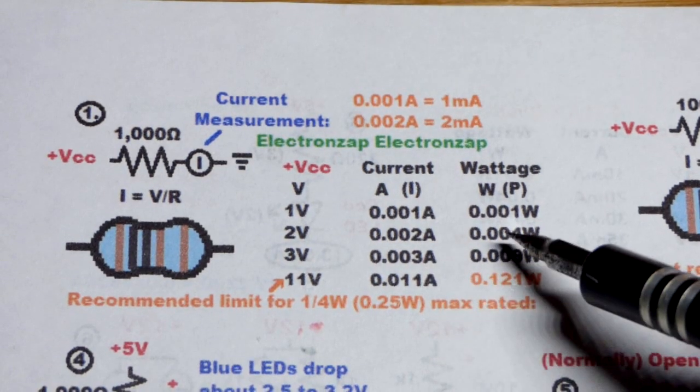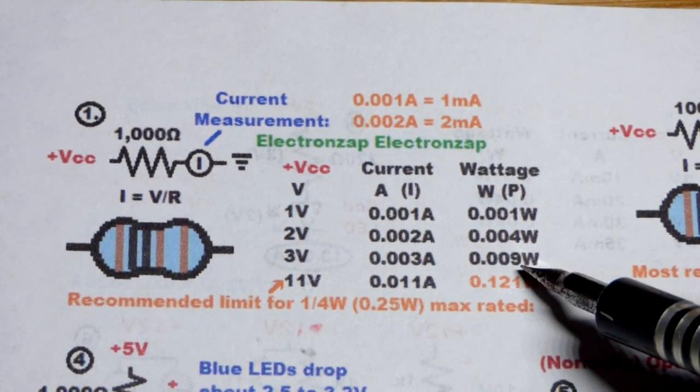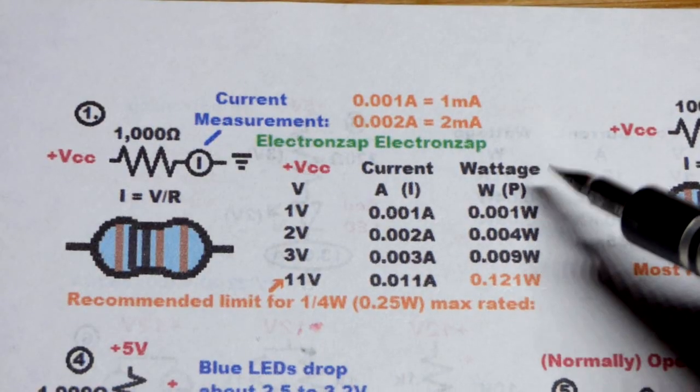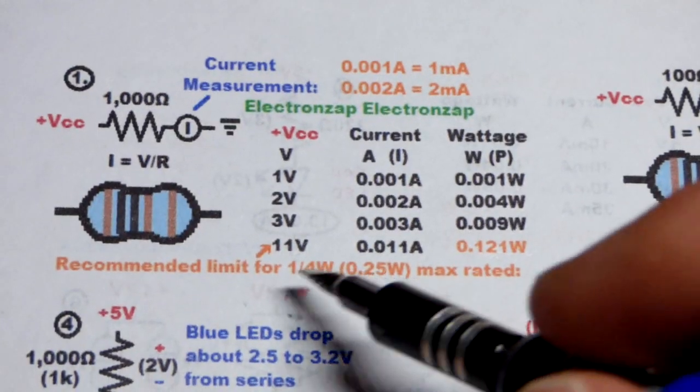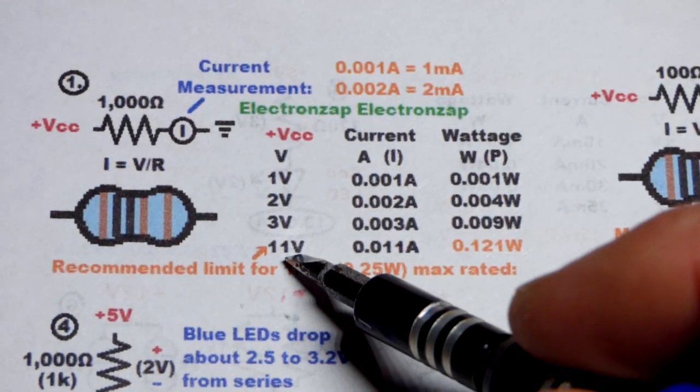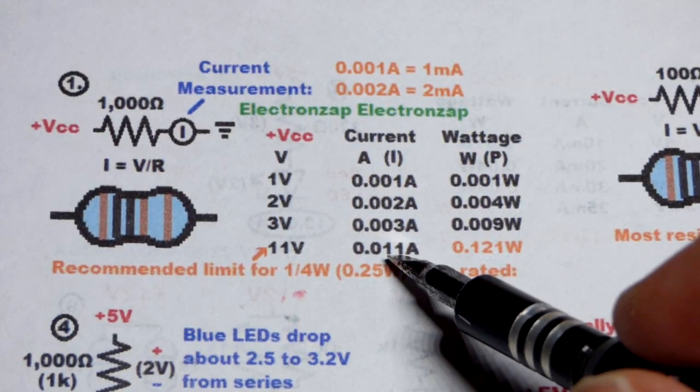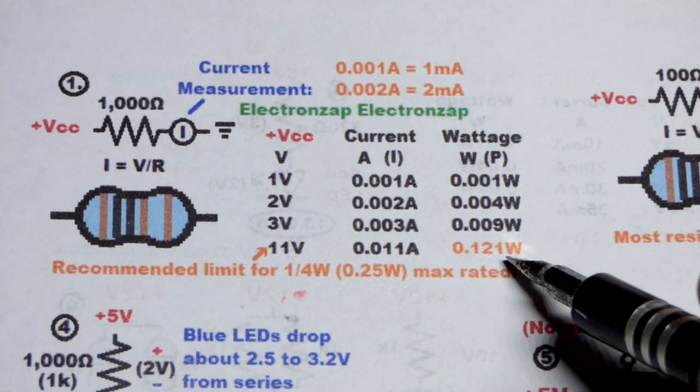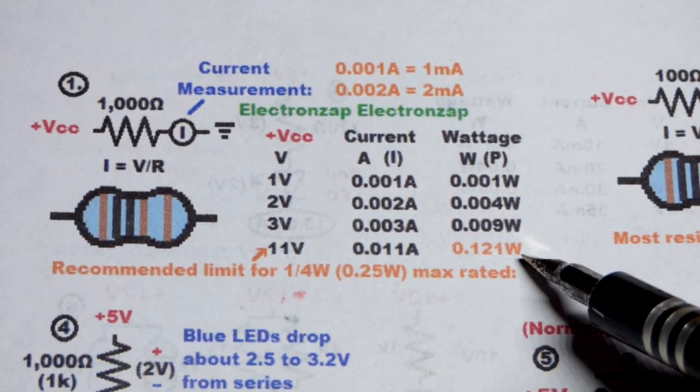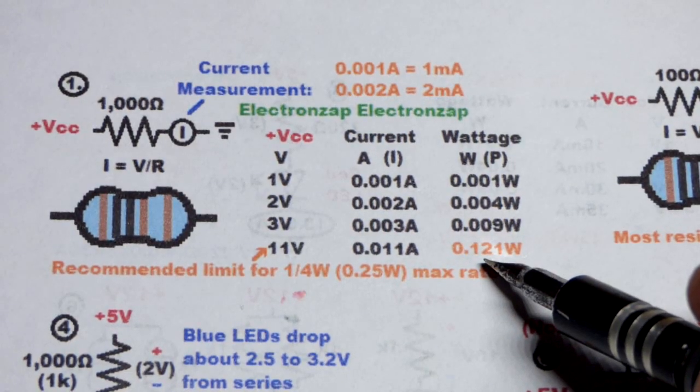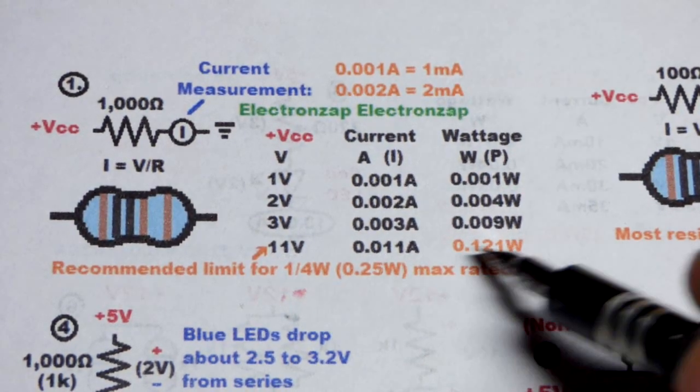Three volts, three milliamps of current, you can have nine milliwatts of current. So this is still not all that hot, but of course it's rising quickly as the voltage goes up. So once we get to 11 volts, we're going to have about 11 milliamps of current flowing and about 121 milliwatts when we want to stay below 125 milliwatts.